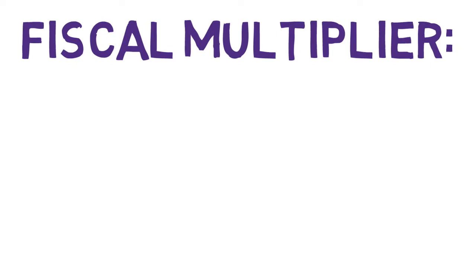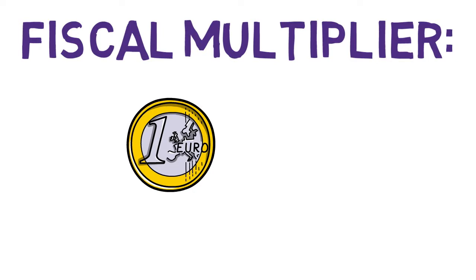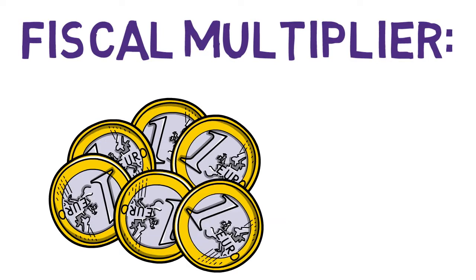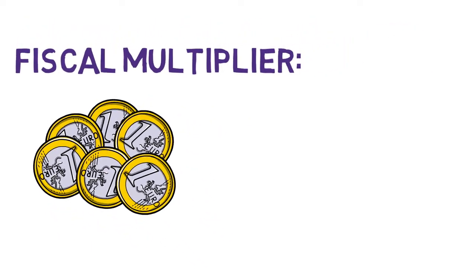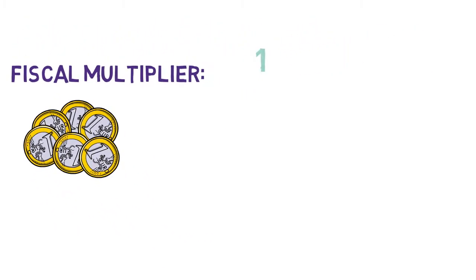How could we work out the entire amount it may generate in the economy? We can do this with a formula — we call this the fiscal multiplier formula. It shows how an extra euro, or 100 euro in this case, could potentially create in extra GDP. The formula is: one over one minus MPC, where MPC stands for marginal propensity to consume.